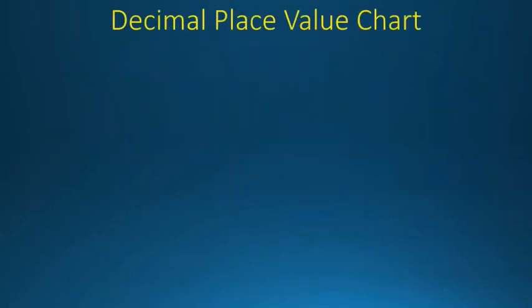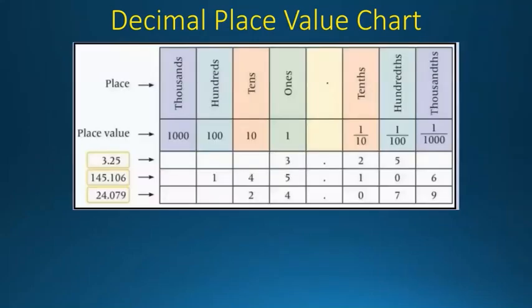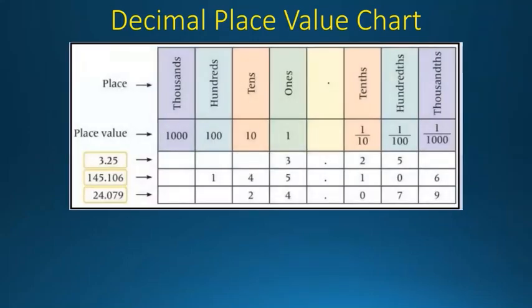Now let us learn about the decimal place value chart. As you can see, there is a place value chart using the decimal. The places we have are: thousands, hundreds, tens, ones, decimal point, tenths, hundredths, and thousandths. The place values are one thousand, one hundred, ten, one, then the decimal point, then 1/10, 1/100, and 1/1000.